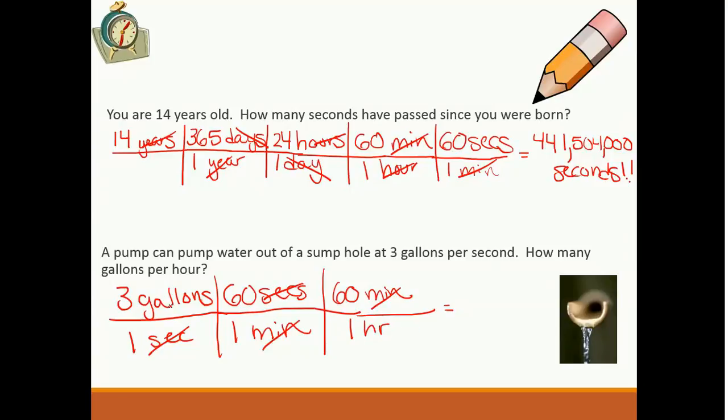Now I need my minutes to cancel out. So I know 60 minutes is in 1 hour. Minutes are gone. Notice how I'm not touching gallons because I only want to convert seconds. So now I'm at gallons over hours. Exactly what I wanted. That's what per pretty much means. It means division. So let's figure out what our numerator gives us: 3 times 60 times 60. That gives us 10,800 gallons per hour. A lot of gallons.